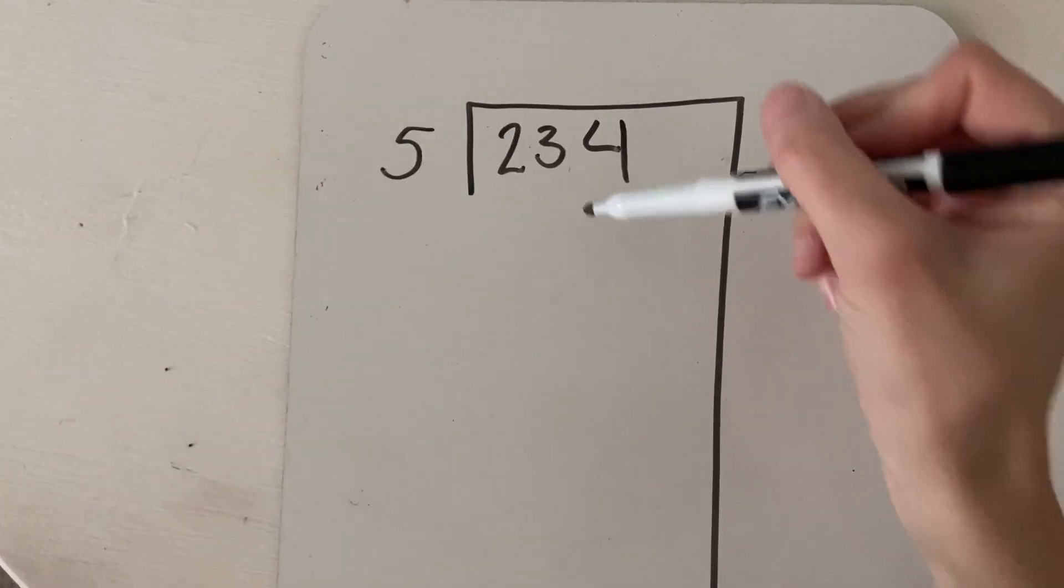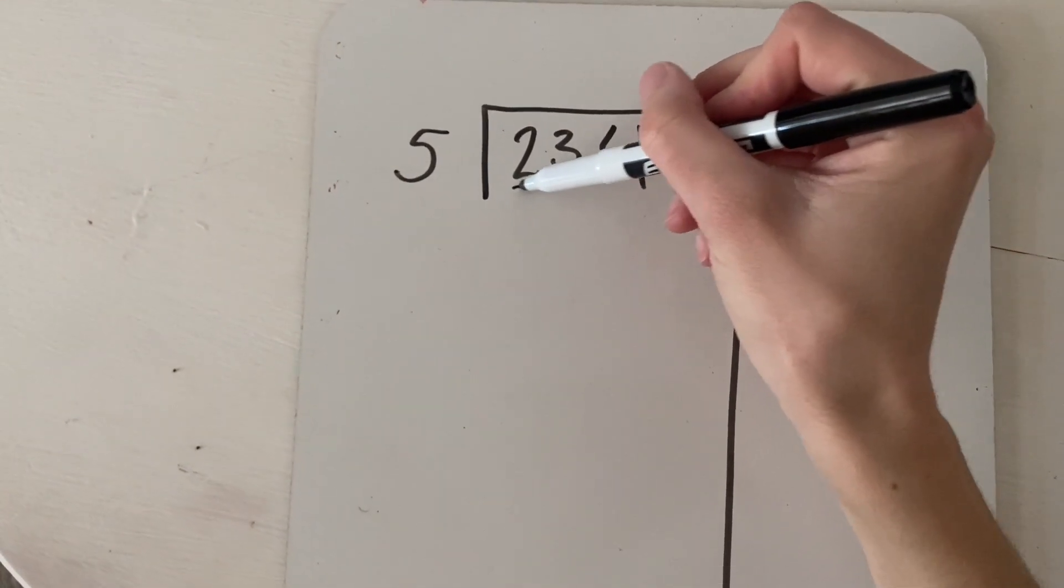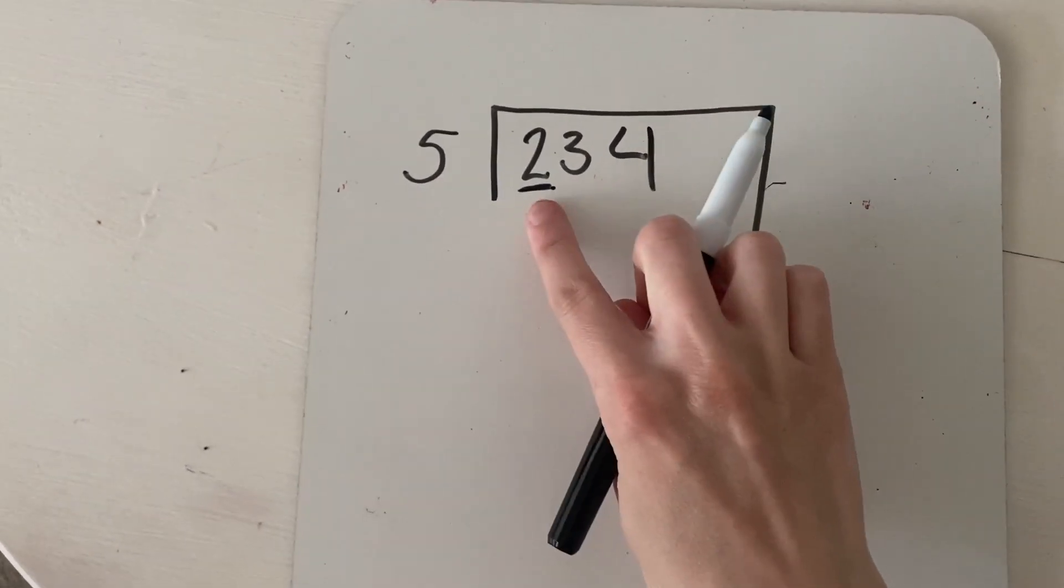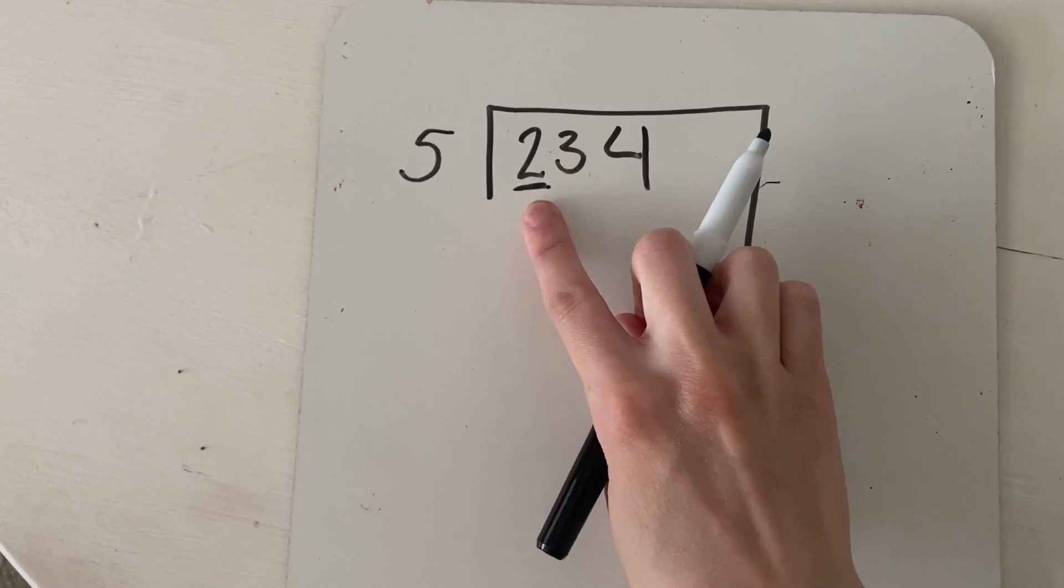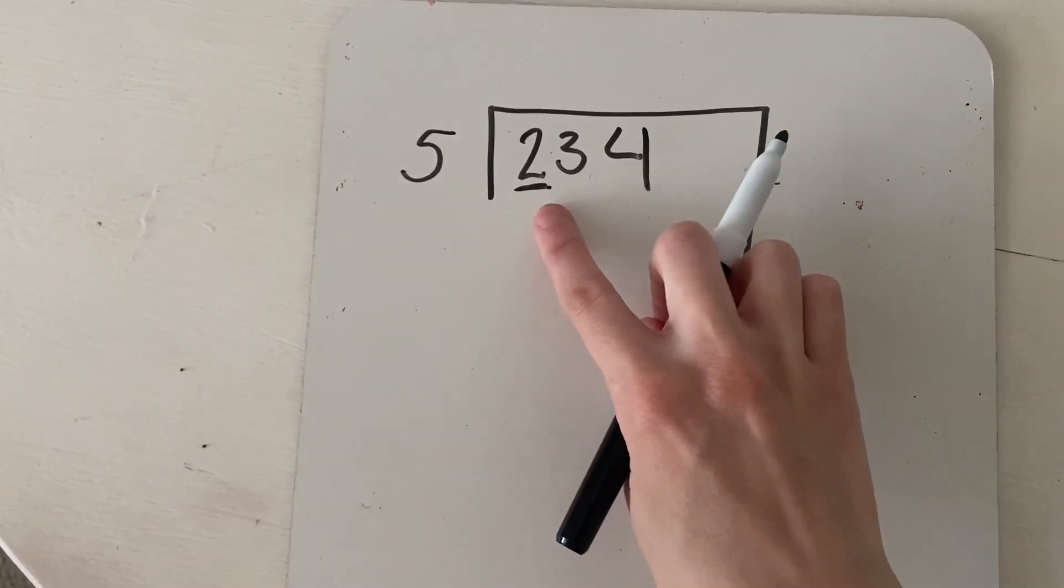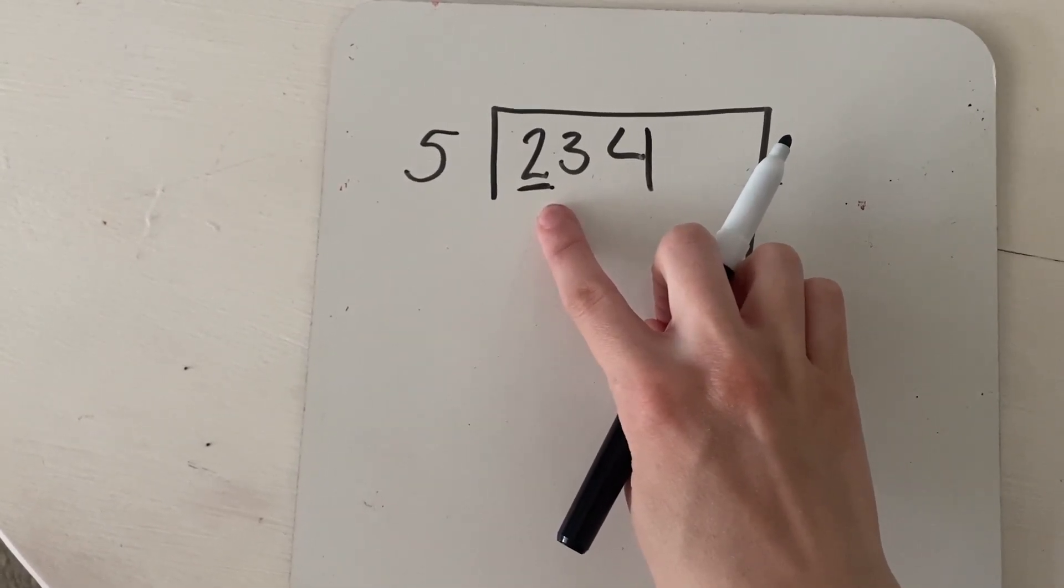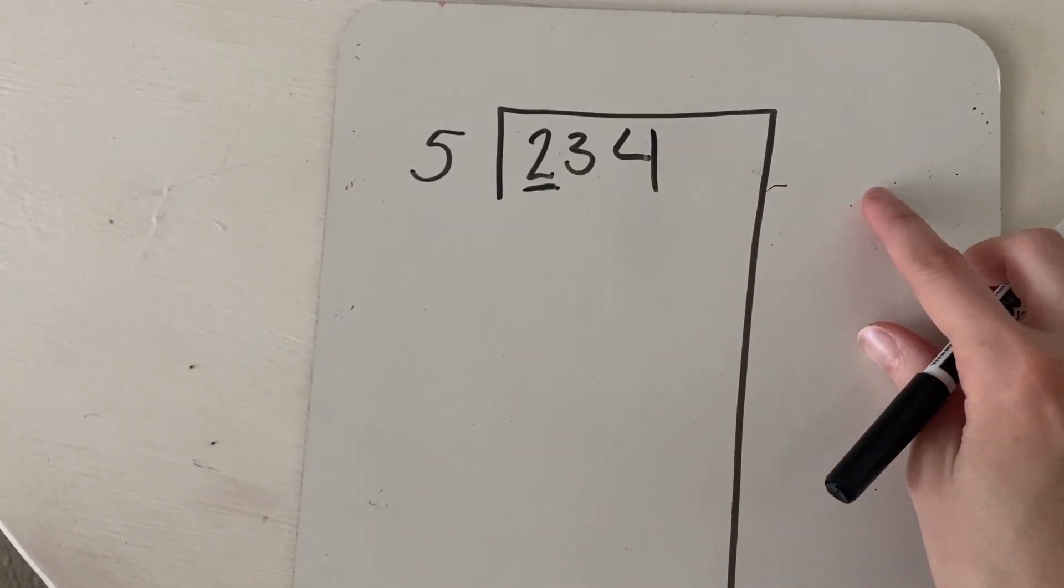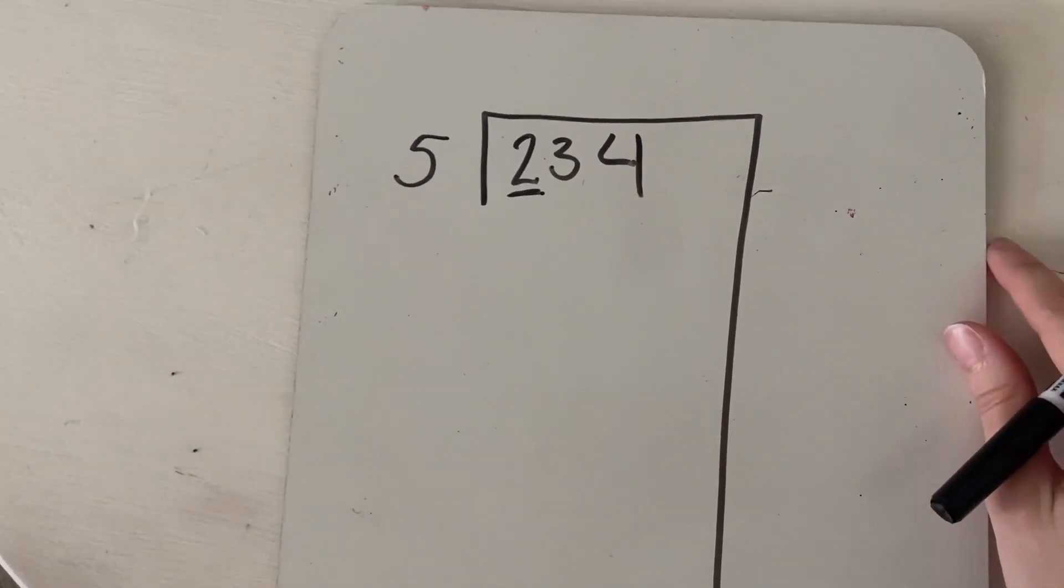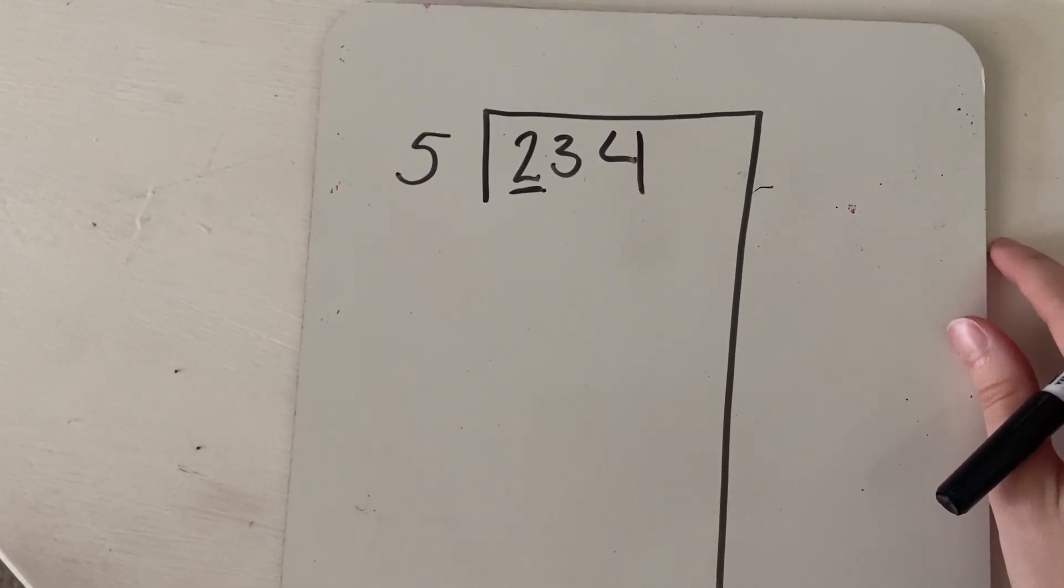So what we do is we look at the value of one digit at a time. So this two is in the hundreds place, which means it's really 200. So I think to myself, how many times do I think that five could go into 200? And I want to make a guess over here on the side. Doesn't have to be exact yet. It's totally fine if it's not, but we want to get our best guess.